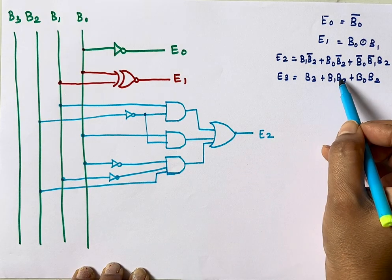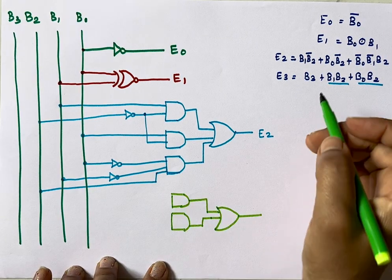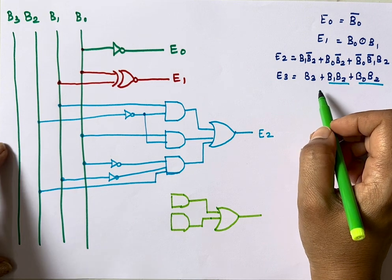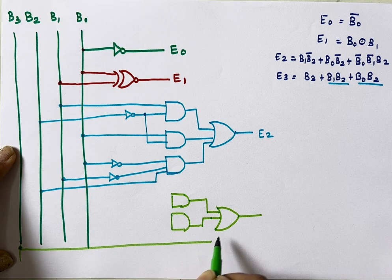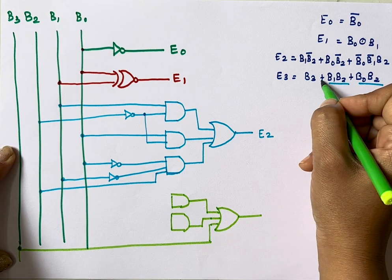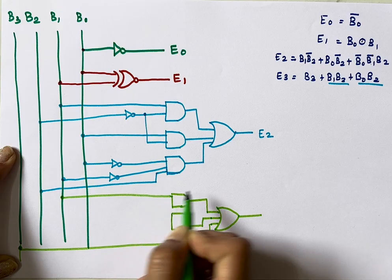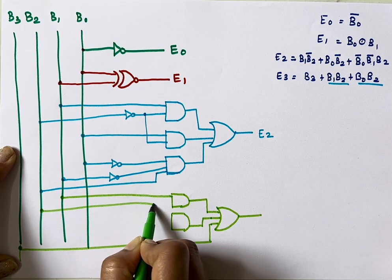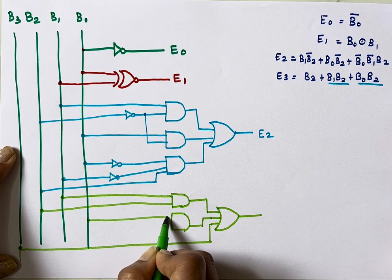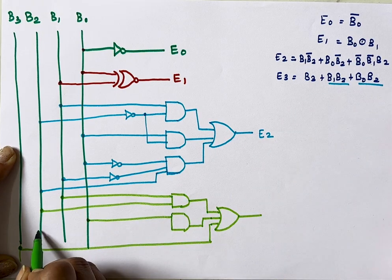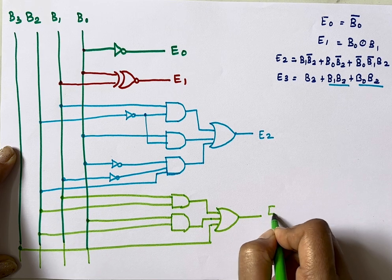For E3, we need 2 AND gates and 1 OR gate. The OR gate inputs are: B3 directly, the output of the first AND gate (B1 and B2), and the output of the second AND gate (B0 and B2). So B3 is taken directly, B1 and B2 go to the first AND gate, and B0 and B2 go to the second AND gate. The OR gate output is E3.